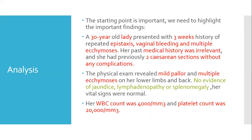The white blood cell count was 4,000 and the platelet count was 20,000. We now place these findings into their pathophysiological meaning to help us with the differential diagnosis.